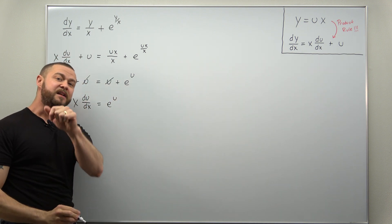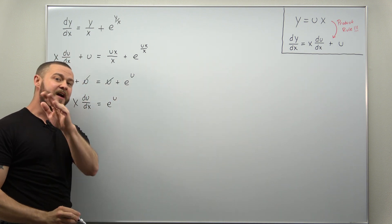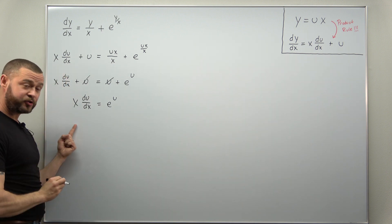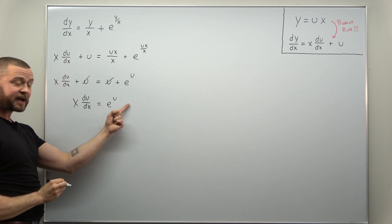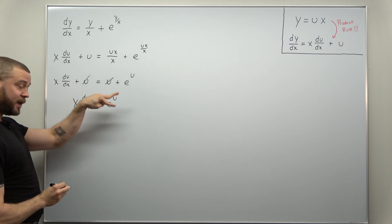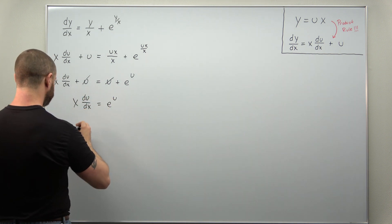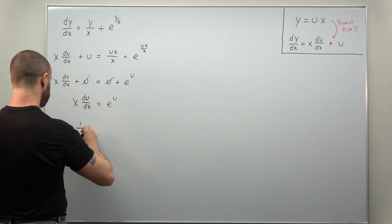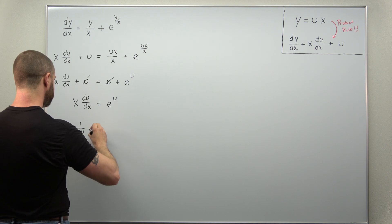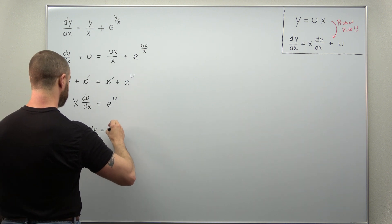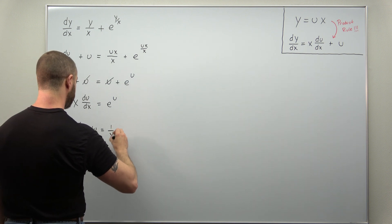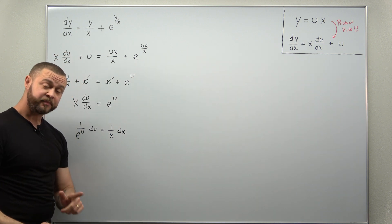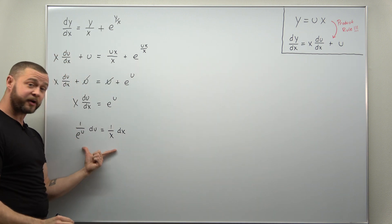From here it separates very easily. Divide by the exponential term, multiply the dx over, and divide by x. We get 1 over e to the u du equals 1 over x dx. This is now separated.